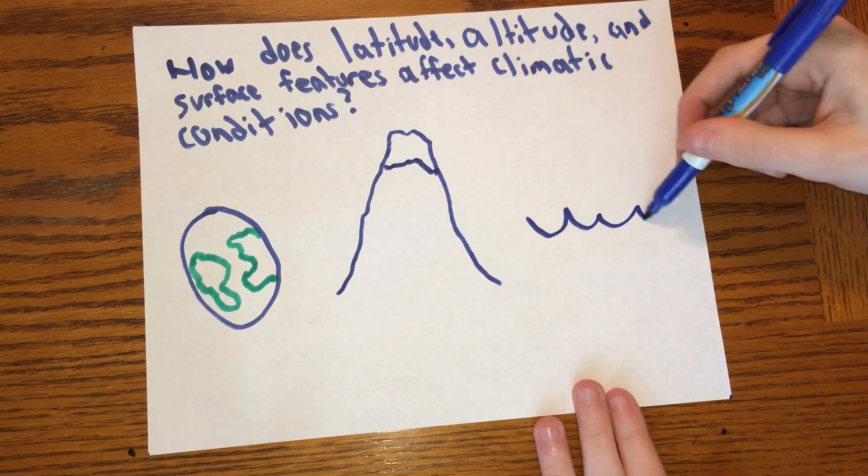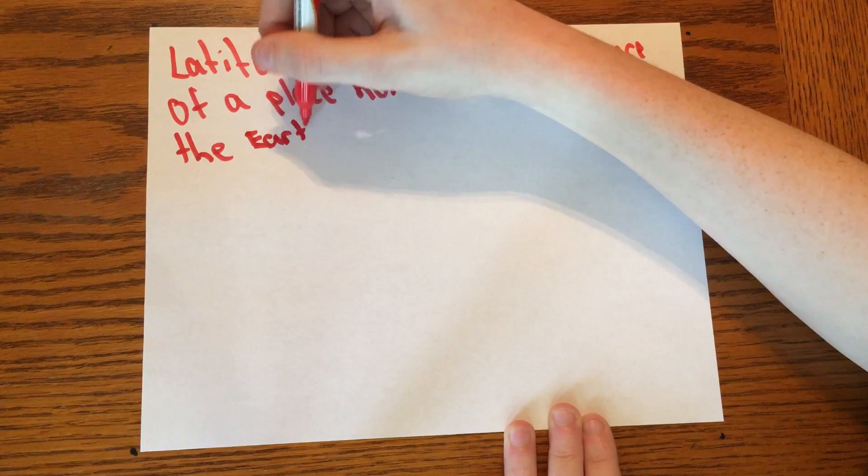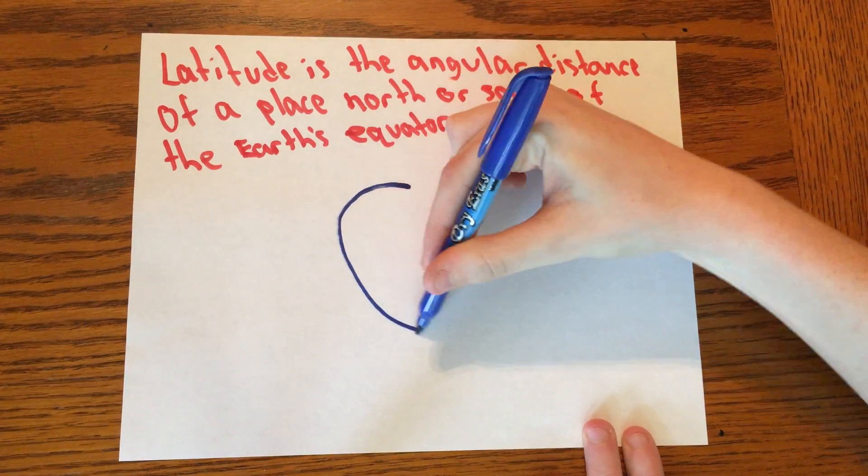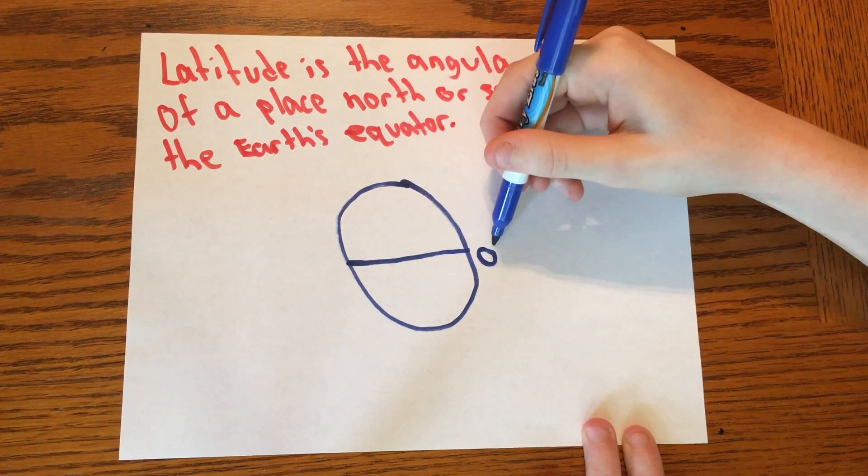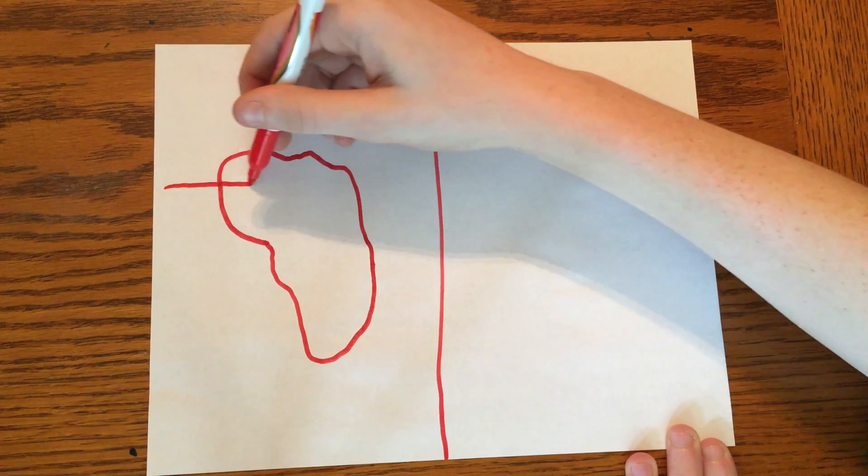Let's start off with latitude. Latitude is the angular distance of a place north or south of the equator. Locations at lower latitude, such as Africa, will receive more direct and intense sunlight.